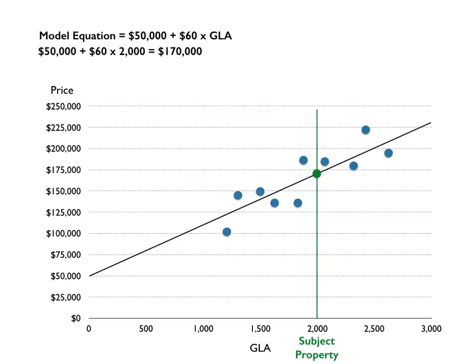If we use that equation and plug in two thousand square feet, we end up with an estimate of one hundred and seventy thousand for the subject property. We also note that when we draw a line horizontally over to the price axis, it confirms one hundred and seventy thousand. So there's our model.